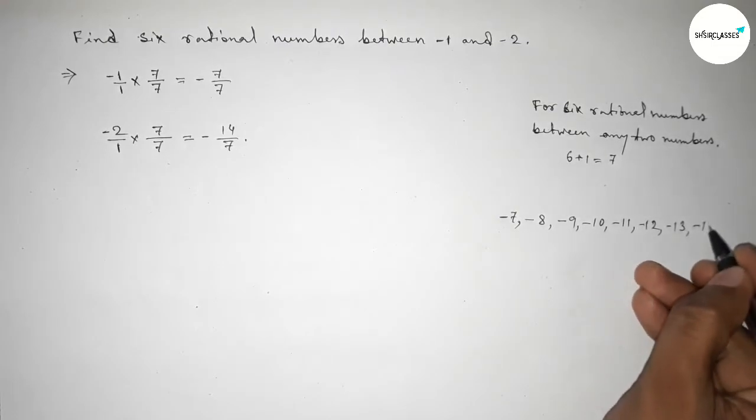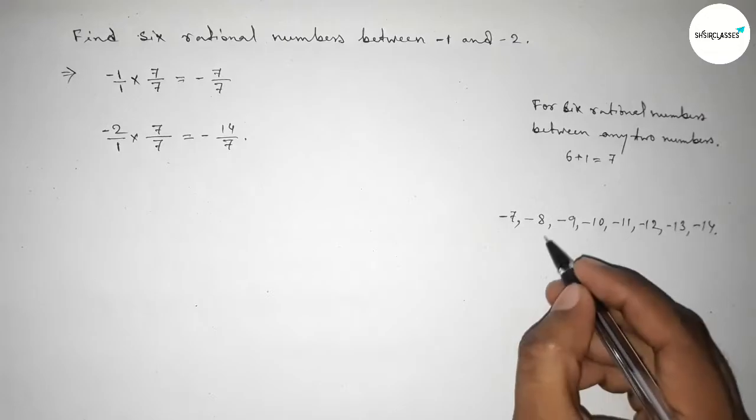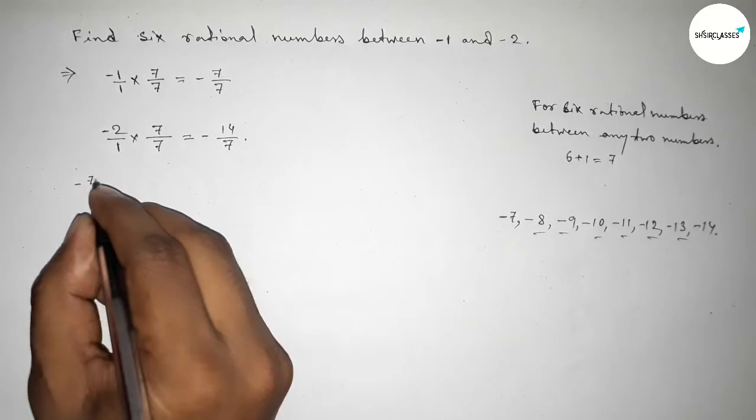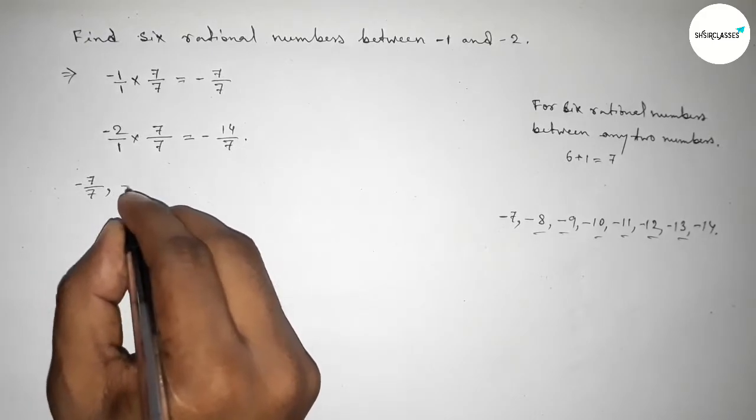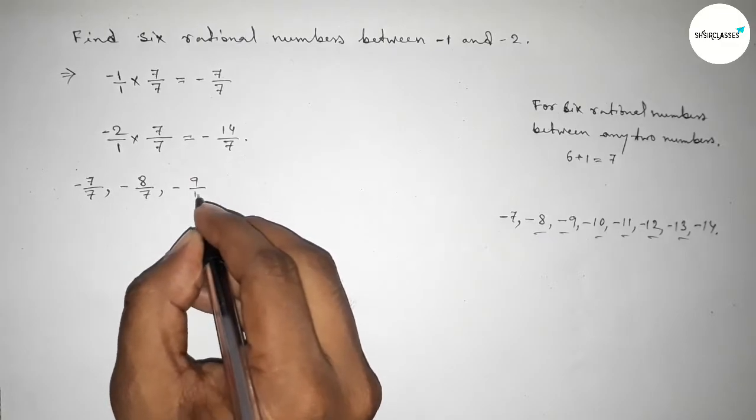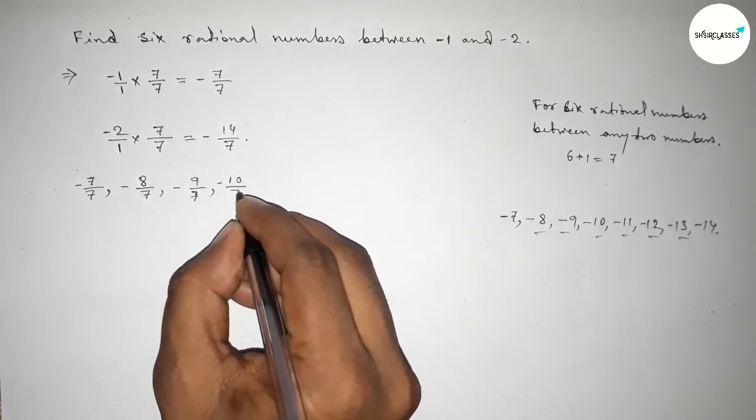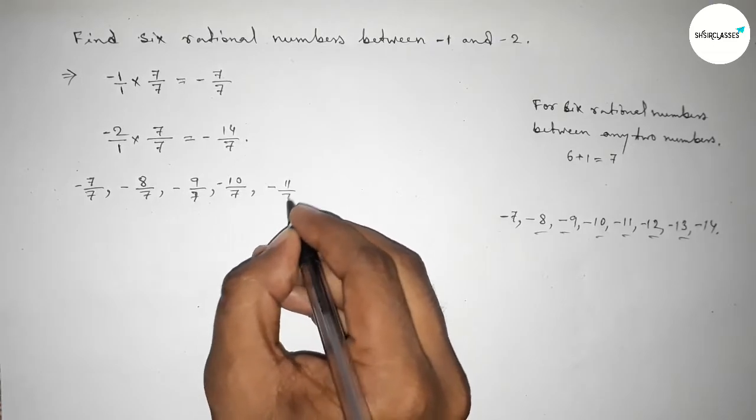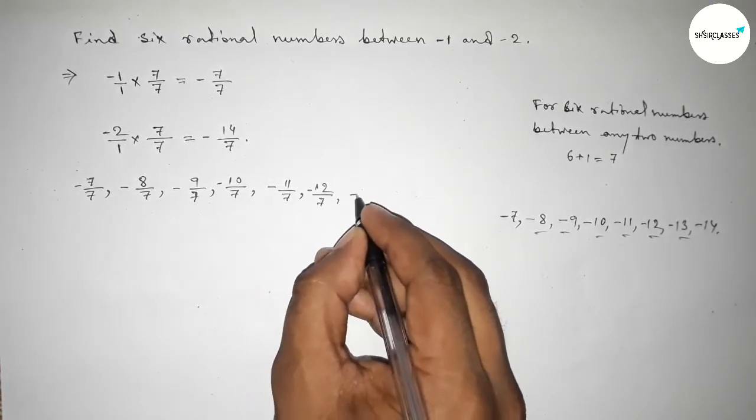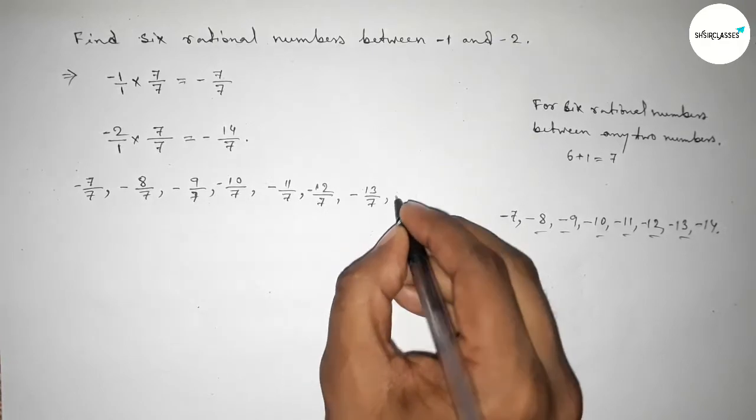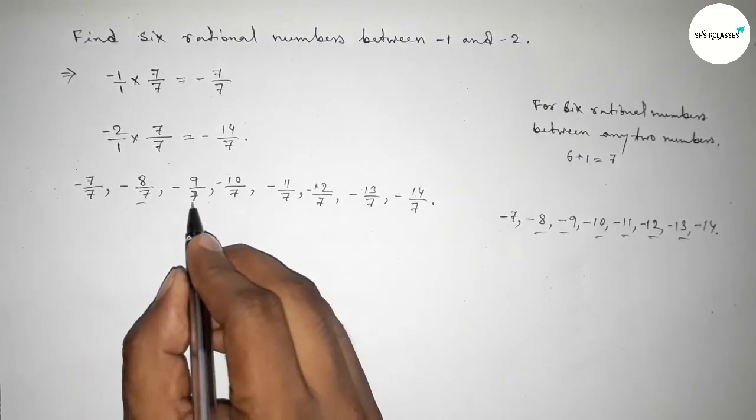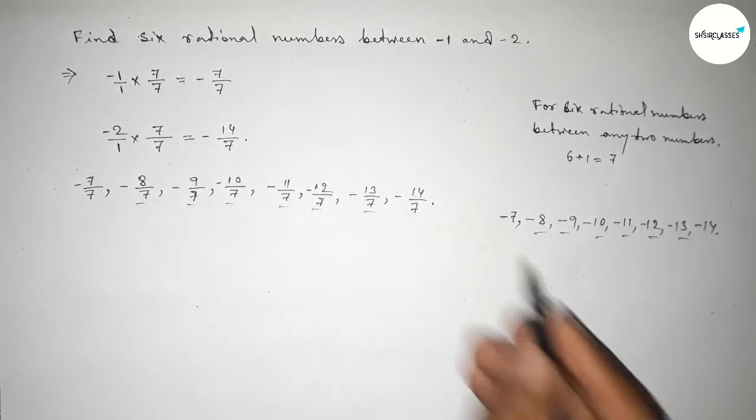So here, write down all the negative integers. These are the required six negative integers. Now write down here all the rational numbers. So first one minus 7 over 7, minus 8 over 7, minus 9 over 7, minus 10 over 7, up to minus 14 over 7.